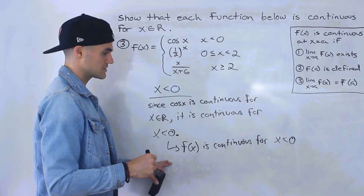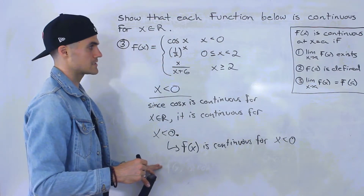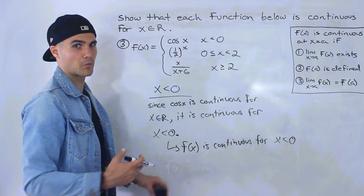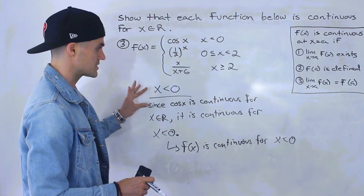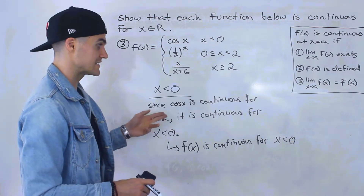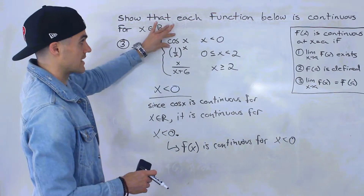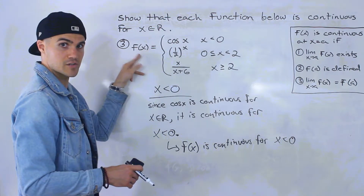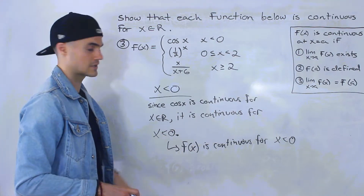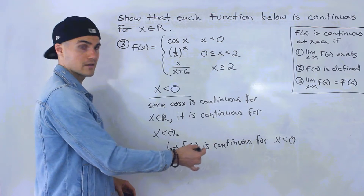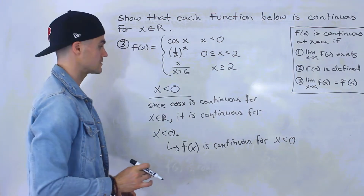In the previous two examples I didn't include this statement, but here I'll write it more properly. Since cos(x) is continuous for x∈ℝ, it's continuous for x less than zero. And since cos(x) defines f(x) for x less than zero within this piecewise function, f(x) is also continuous for x values less than zero. That's the full proper way to show it.